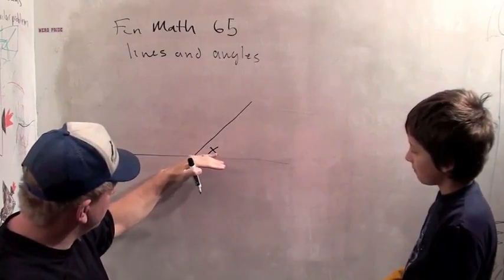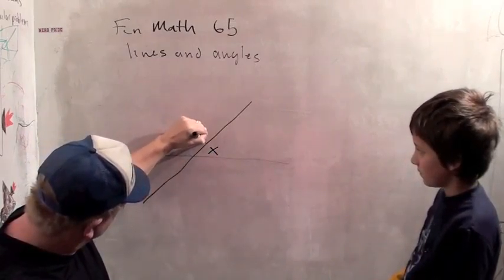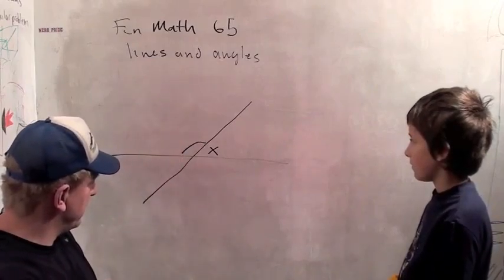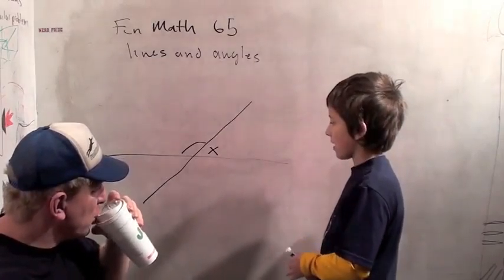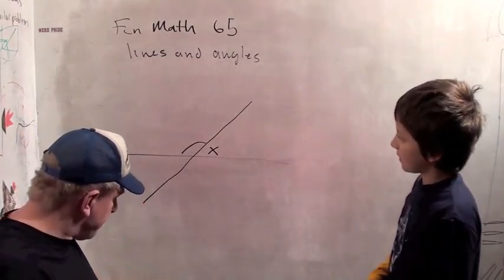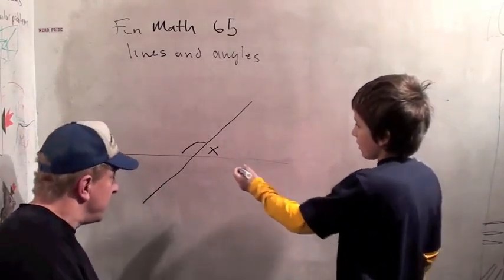So if this makes an angle x, how are we going to figure out what this angle here is? What's the geometric insight that we can have? Well, angles on a straight line add up to 180 degrees. Okay. This angle is 180 minus x.